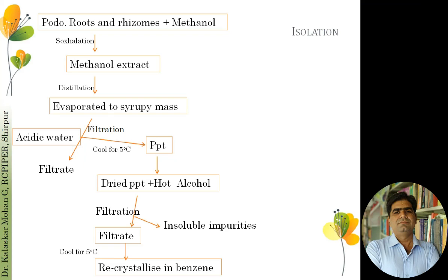This class of phytoconstituents shows specific solubility — they are soluble in moderately polar solvents like ethanol and methanol, while they are insoluble in extreme non-polar solvents such as benzene, chloroform, and hexane, as well as insoluble in water. They are very freely soluble in ethanol and methanol, and this is the basis of the isolation of podophyllotoxin from plant material.